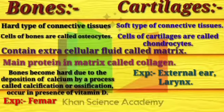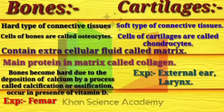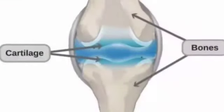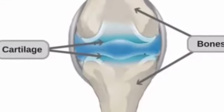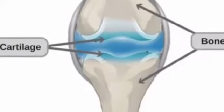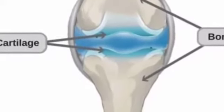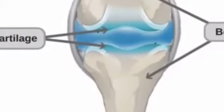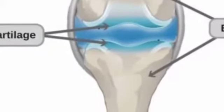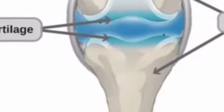Both bones and cartilages contain extracellular fluid called matrix. The matrix contains a small protein called collagen. In front of you is the structure of the knee — a unique structure in which both bones and cartilages are shown. Cartilages are soft tissue present on the inner side in fluid, while bones are hard tissue.